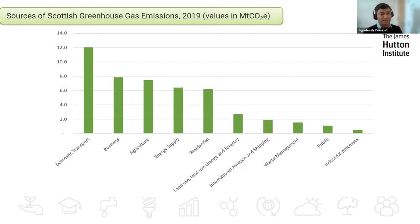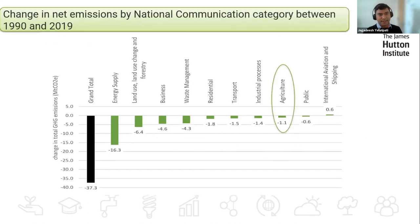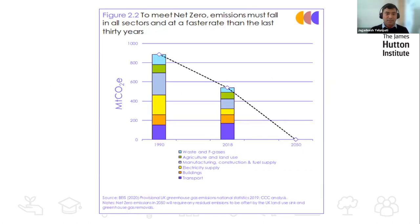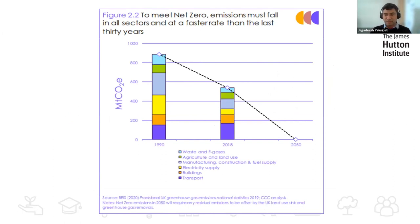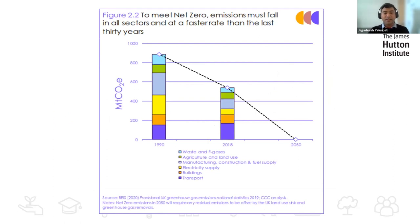In Scotland, agriculture stands at third position as a source of emissions. Looking at changes in net emissions over several decades, substantial reductions have been achieved in the energy sector and in land use — particularly increasing forest cover — but there has been very little progress in the agriculture sector. If we want to achieve net zero by 2050, we need to make substantial reductions in every sector, and the trajectory of the curve shows agriculture must be included.